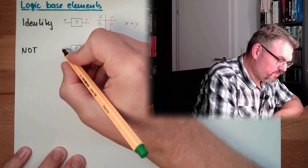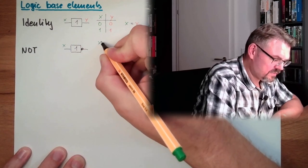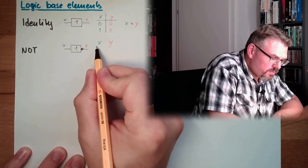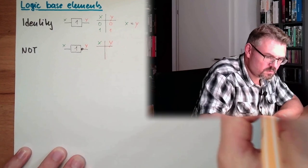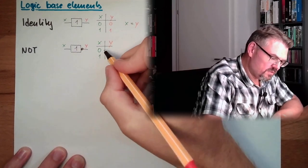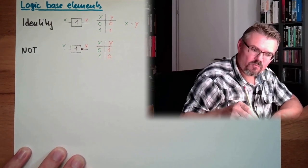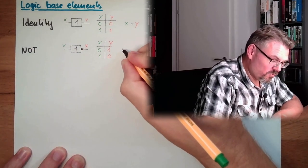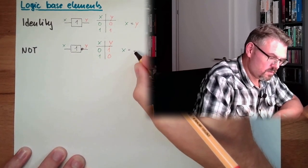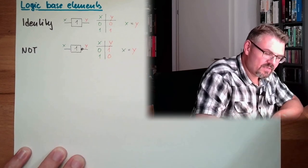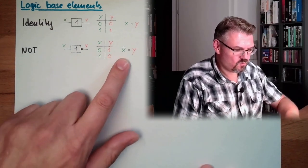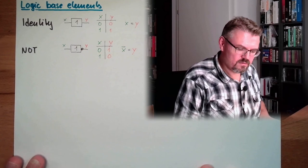Looking at the table of truth: we have x and y. Looking at all possible combinations, x is 0 and 1, then y is exactly the opposite — so y is 1 and 0. Exactly the opposite. The Boolean equation looks like that: NOT x equals y. This little mark here means NOT x.